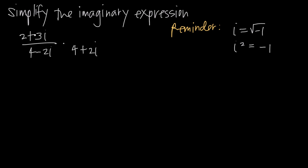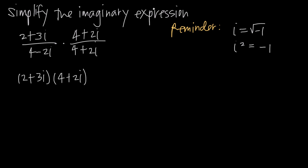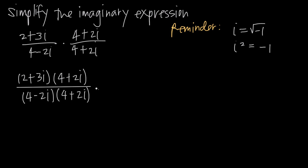What we want to do is multiply both the numerator and the denominator of this fraction by the conjugate of the denominator. The conjugate of the denominator is 4 plus 2i, so we multiply both the numerator and denominator by 4 plus 2i. When multiplying fractions, we multiply the numerators together to get the new numerator — so 2 plus 3i times 4 plus 2i — and we multiply the denominators together, so 4 minus 2i times 4 plus 2i.